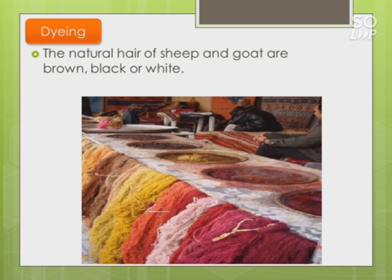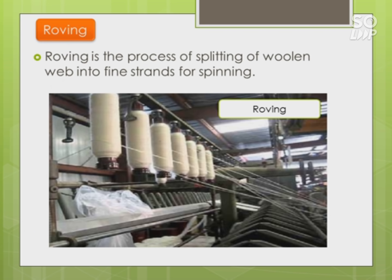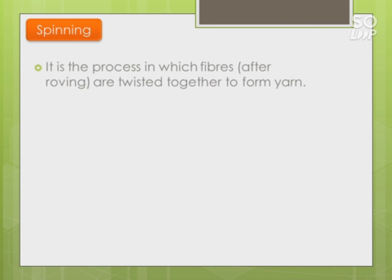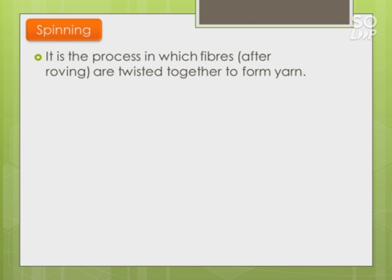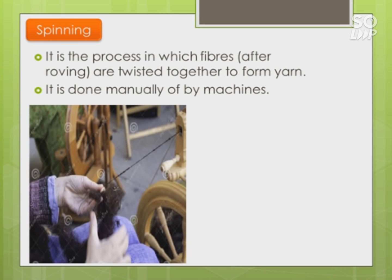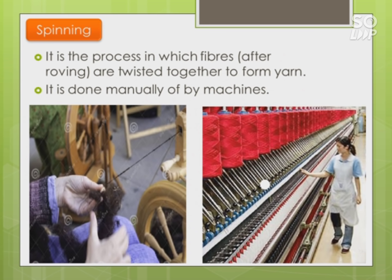If we require different colors of fiber, we need to dye it using different dyes. Roving is the process of splitting the woolen web into fine strands for spinning. After roving, the fibers are twisted together to form yarn - this process is known as spinning. Spinning can be done manually or with the help of machines.